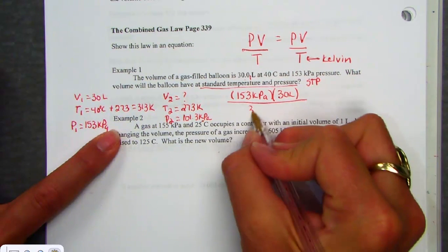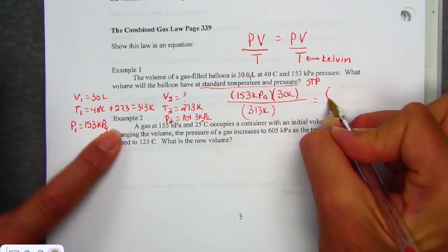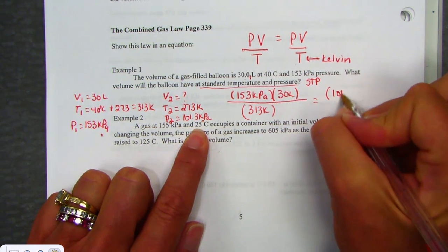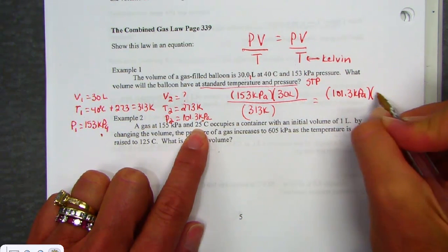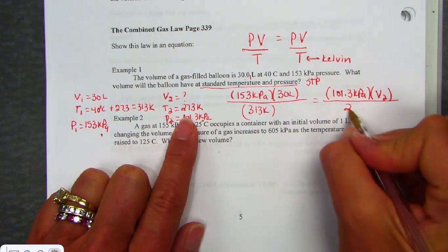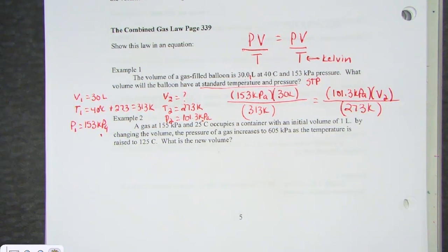Pressure 1, 153 kilopascals, times our first volume of 30 liters, set over our Kelvin unit, 313K. The pressure is now adjusted to the standard value of 101.3. We'd like to know the new volume. And temperature now at its standard condition of 273 Kelvin units.